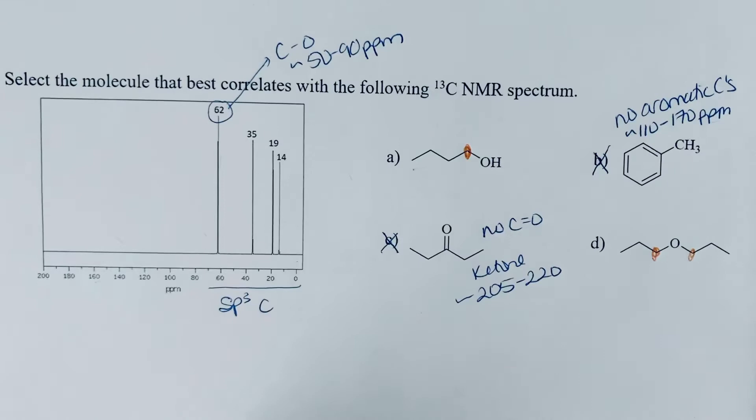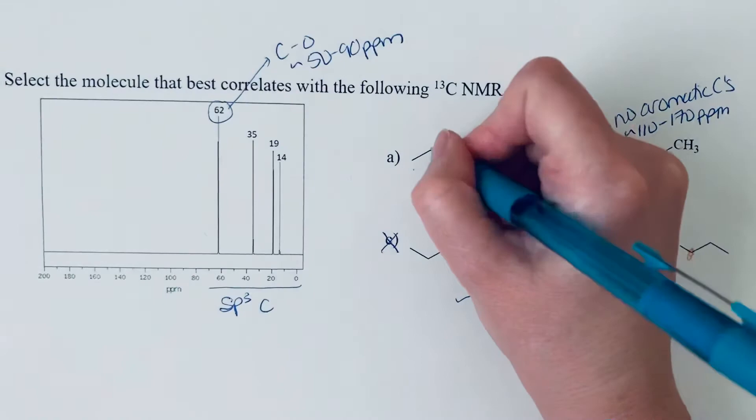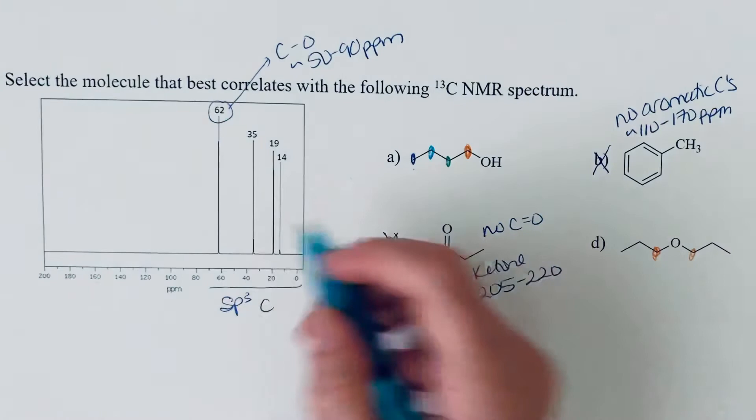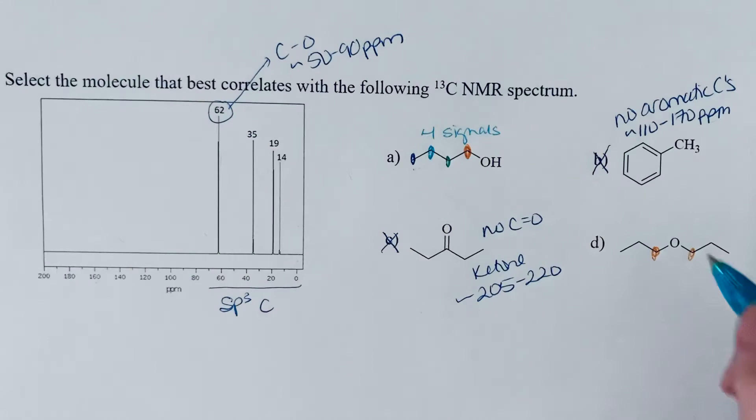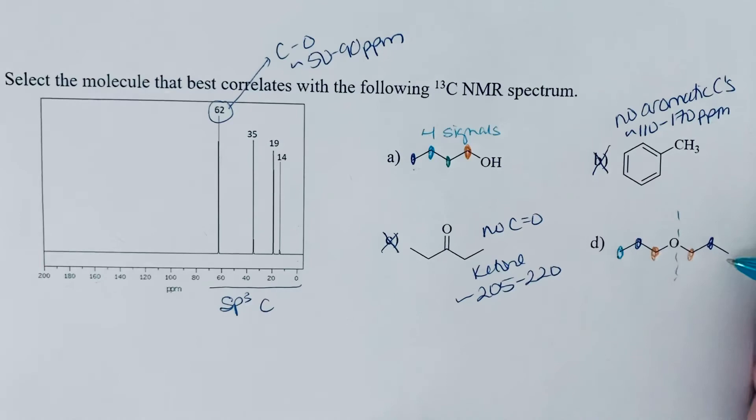So one other thing we can use to distinguish these would be the number of signals. So we should notice that we have no symmetry here in A. So we'd expect one, two, three, four different signals. And that looks consistent with what we are seeing in our spectrum. And if you look at D, there is a plane of symmetry down the center, which means both sides of this will be the same. So those two carbons would be the same, these two, and then finally these N two. So for D, I would expect to see only three signals.